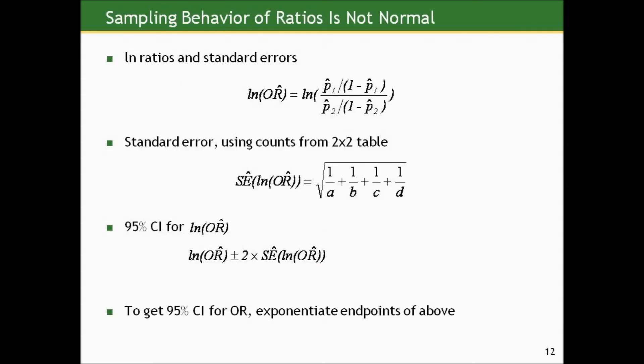Well let's look at the same sort of thing goes on for odds ratios. If we look at the estimated log of an odds ratio from a single study with two samples, one from each population, well the odds ratio is given by that formula there: p1 hat over 1 minus p1 hat divided by p2 hat over 1 minus p2 hat, and then we take the log of that ratio.